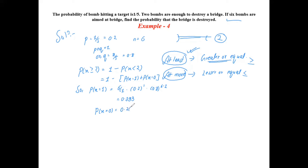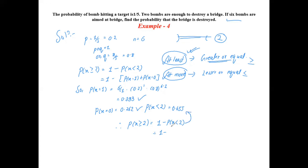And P(X = 0), applying the same formula, gives approximately 0.262. So P(X < 2) equals 0.393 plus 0.262 equals 0.655. Therefore P(X ≥ 2) equals one minus 0.655, which gives a final answer of approximately 0.345. This is the key concept to remember from this question.